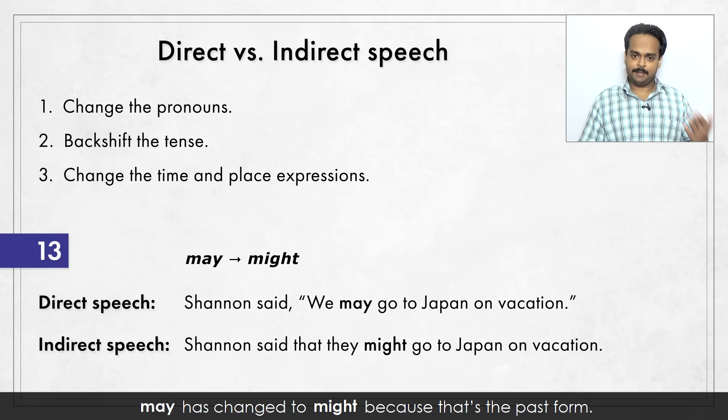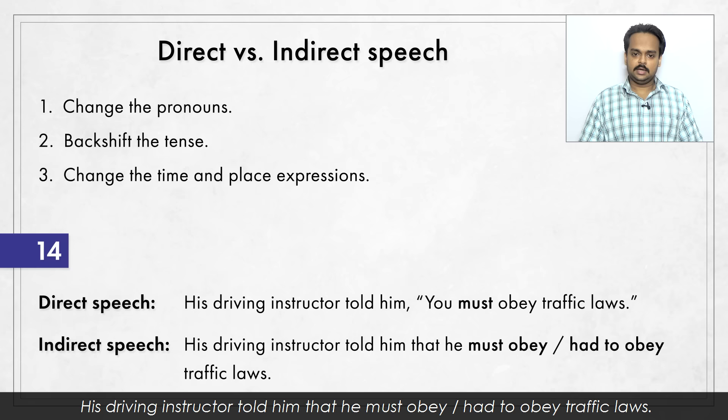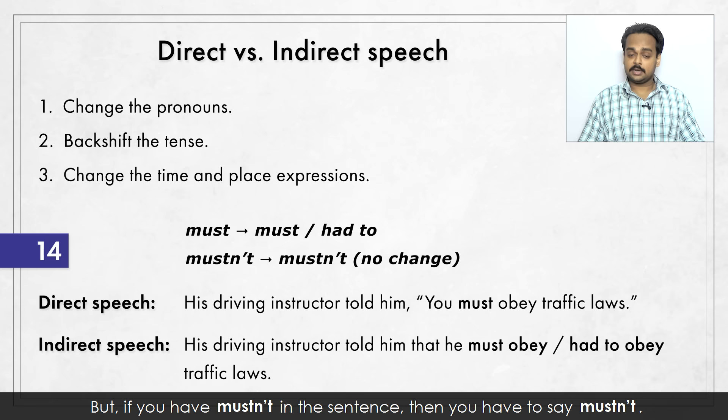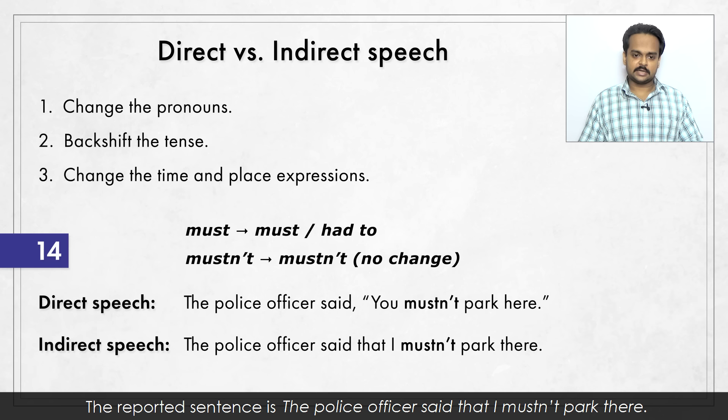Next sentence: His driving instructor told him, "You must obey traffic laws." His driving instructor told him that he must obey – or he had to obey – traffic laws. "Must" can either stay the same or you can say "had to". But if you have "mustn't" in the sentence, then you have to say "mustn't". For example, the police officer said, "You mustn't park here." The reported sentence is: the police officer said that I mustn't park there. So "mustn't" stays as "mustn't".